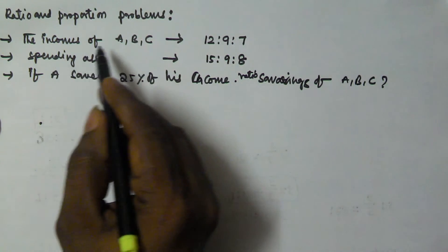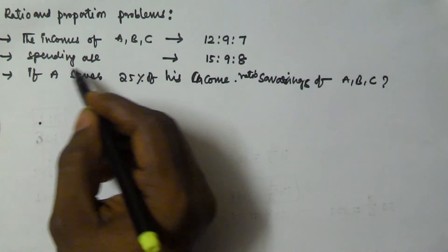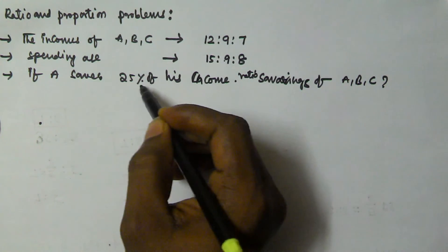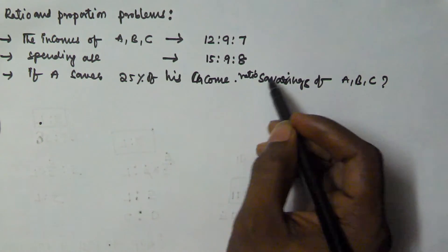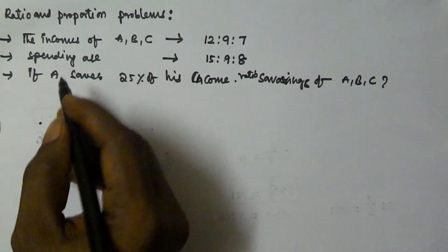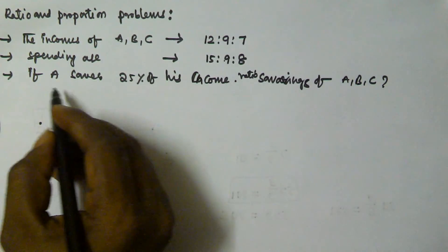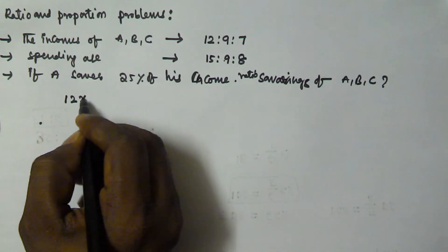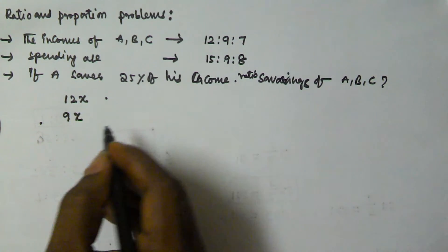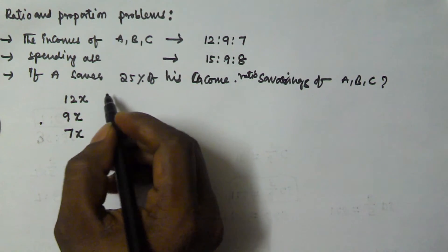The incomes of A, B, and C are in the ratio 12:9:7 and the spendings are in the ratio 15:9:8. If A saves 25% of his income, we have to find the ratio of savings of A, B, and C. We can assume A's income is 12x, B's income is 9x, and C's income is 7x.